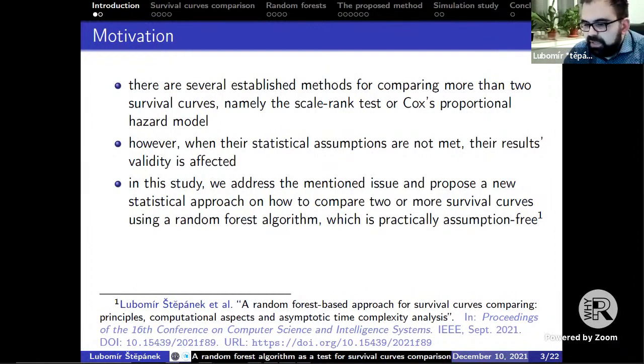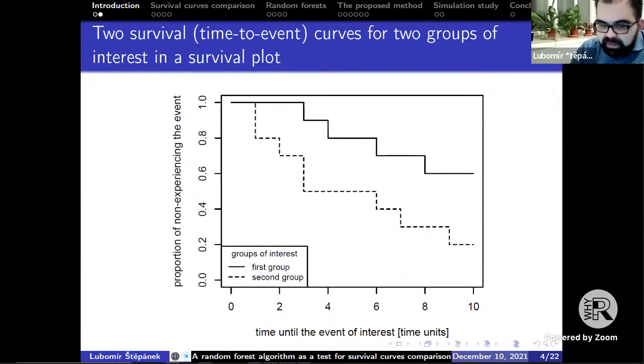But all the methods mentioned are easily available in different software. However, each one of them is usually limited by rigorous statistical assumptions. In this study we address the mentioned issue and propose a new statistical approach on how to compare two or more survival curves using a random forest algorithm, which is particularly assumption-free.